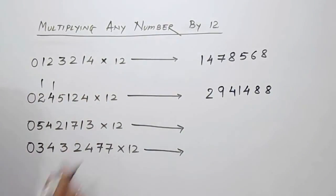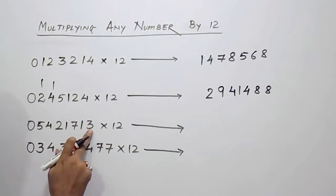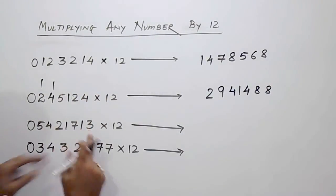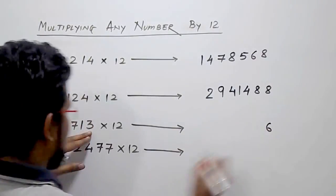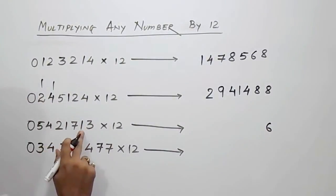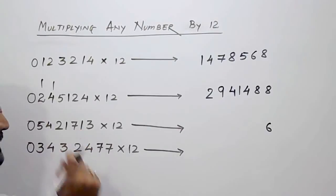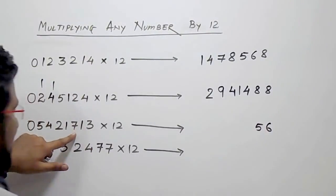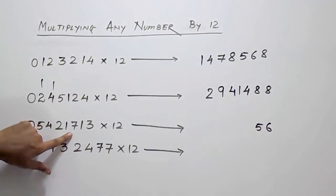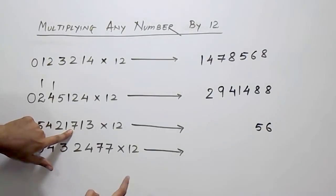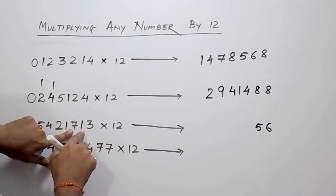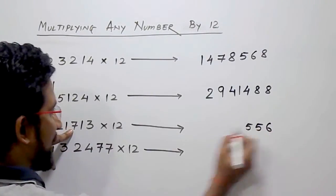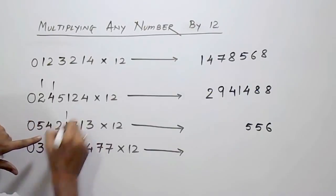Now we will see the next one. 3's double is 6. Then 1's double is 2, 2 plus 3, that is 5. Then next is 7 — 7's double is 14, 14 plus 1, that is 15. So I'll write just 5 here and carry forward 1.